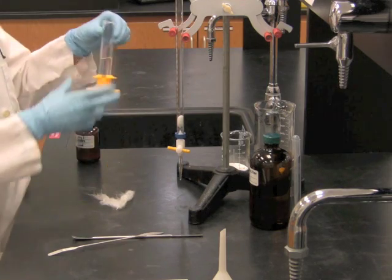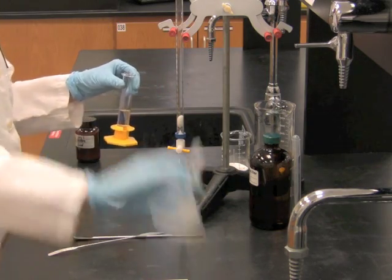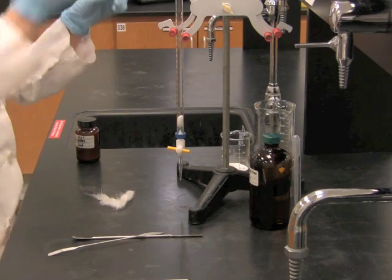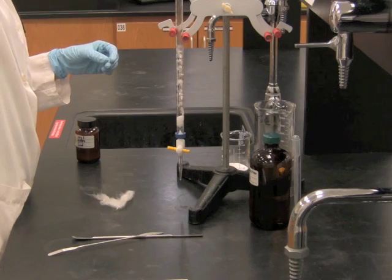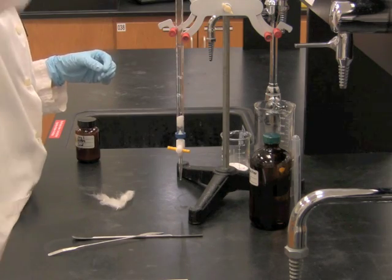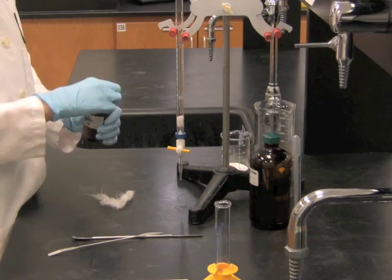Next, we're going to add 15 milliliters of low boiling petroleum ether to the column. Next, we'll add about a centimeter of sand.